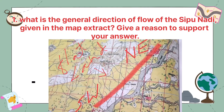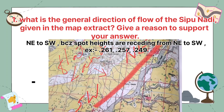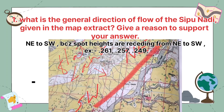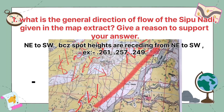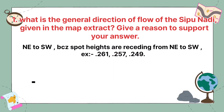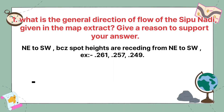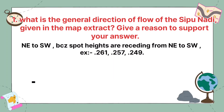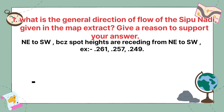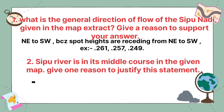What is the general direction of flow of the Sipu Nadi given in the map extract? The general direction of flow of Sipu Nadi is from north-east to south-west, because the spot heights are decreasing from north-east to south-west — for example, from spot height 261 to spot height 249.